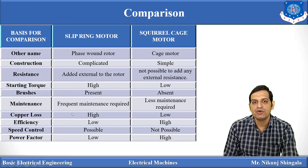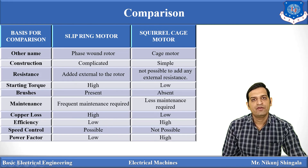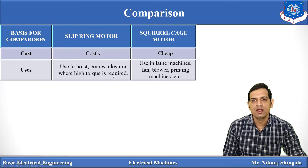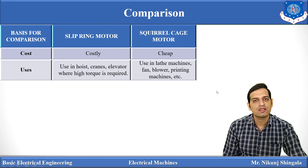Copper loss is very high in the slip ring motor and low in the squirrel cage motor. Efficiency of the slip ring motor is low, while squirrel cage motor efficiency is high. Speed control is possible in the slip ring motor by adding external resistance, but not possible in the squirrel cage motor. Power factor is low for slip ring and high for squirrel cage. Cost is high for slip ring motor due to three-phase winding, brushes, and slip rings; squirrel cage motor is less costly. Slip ring motors are used in grain elevators where high starting torque is required; squirrel cage motors are used in lathe machines, fans, and blowers where high starting torque is not required.